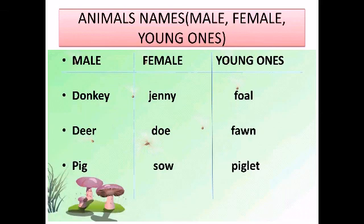Next is deer — female: doe, young: fawn. Next is pig — female: sow, young: piglet.